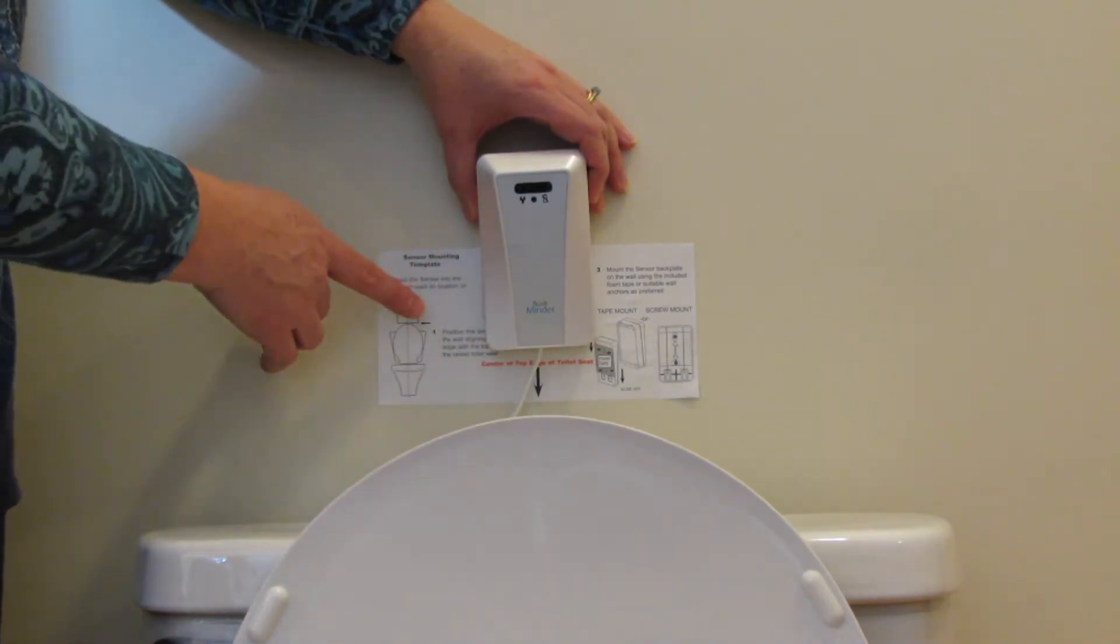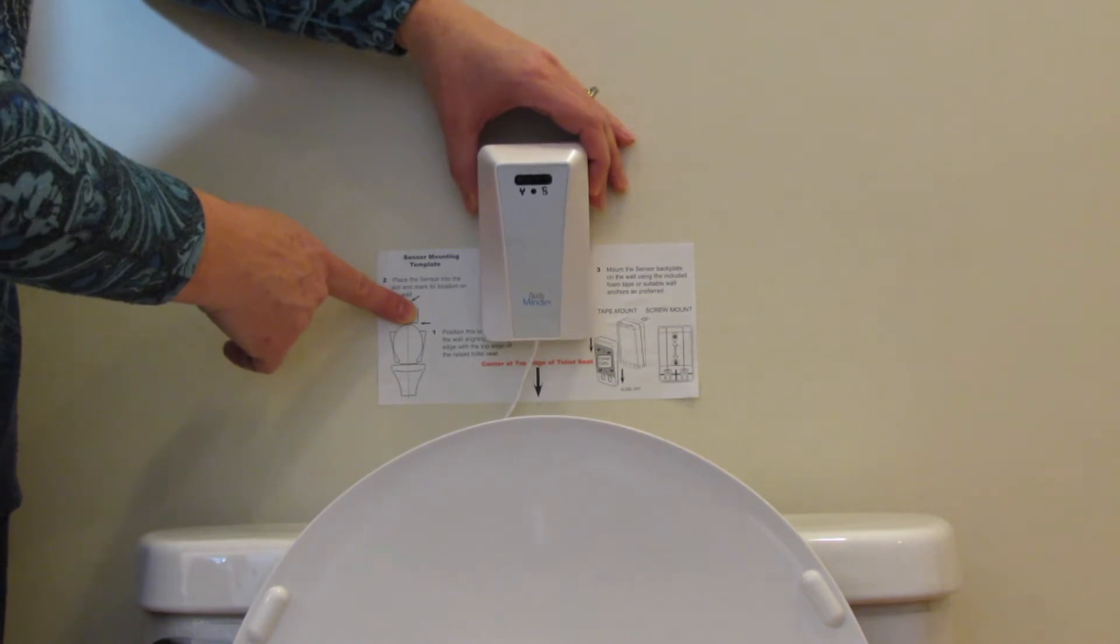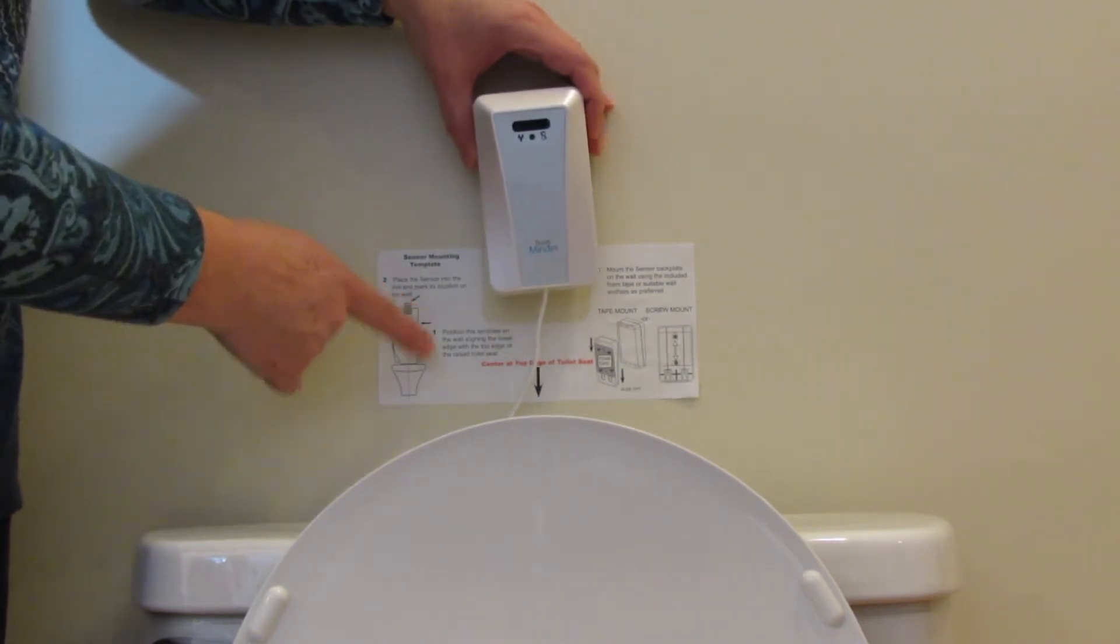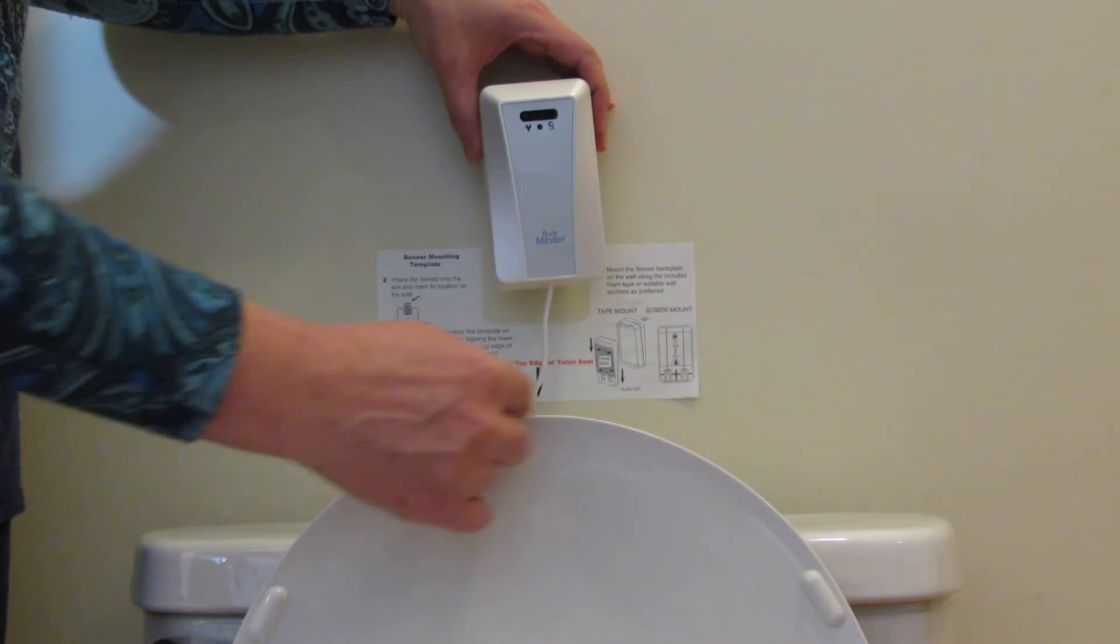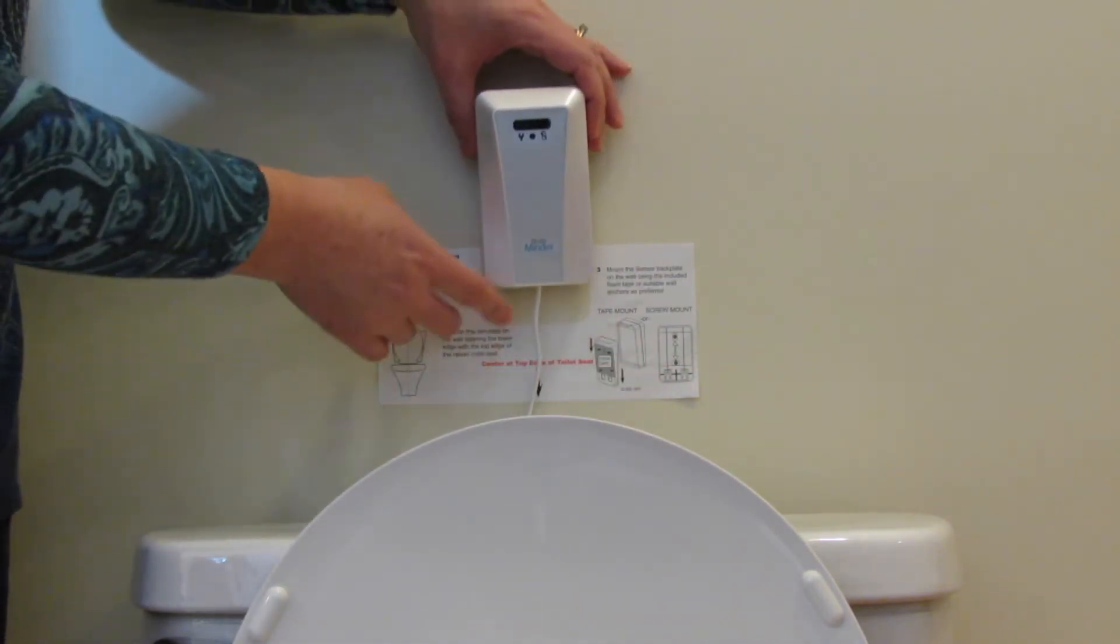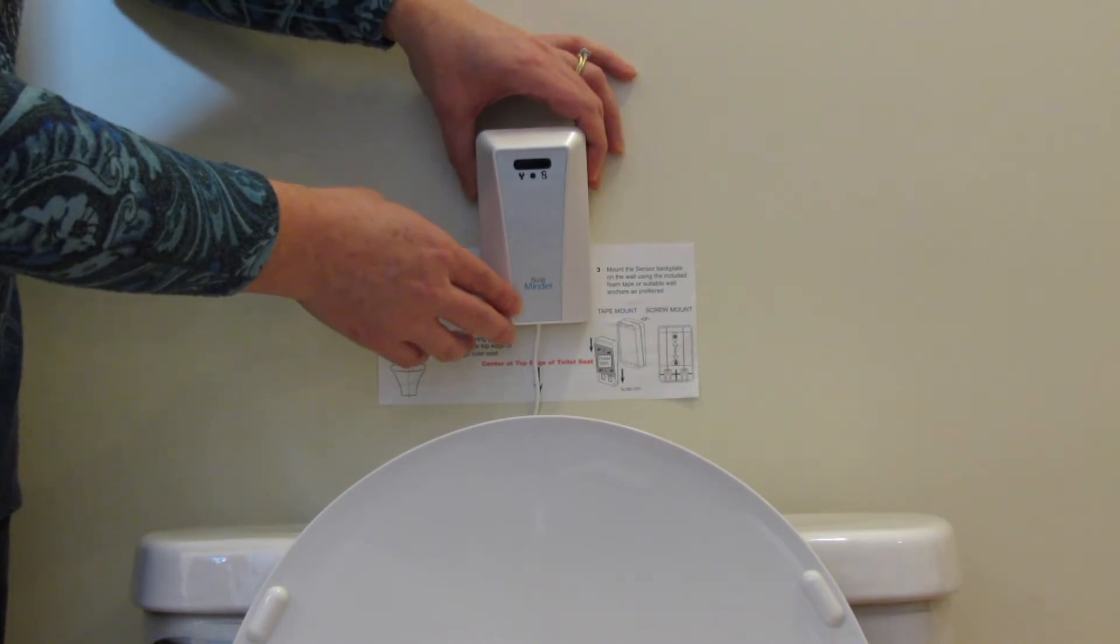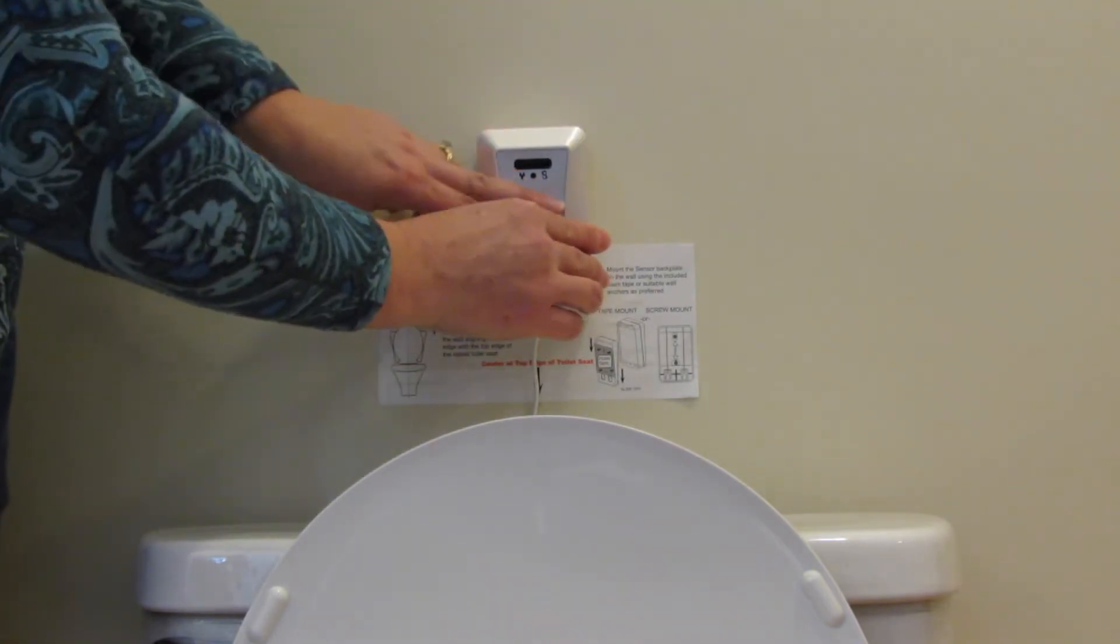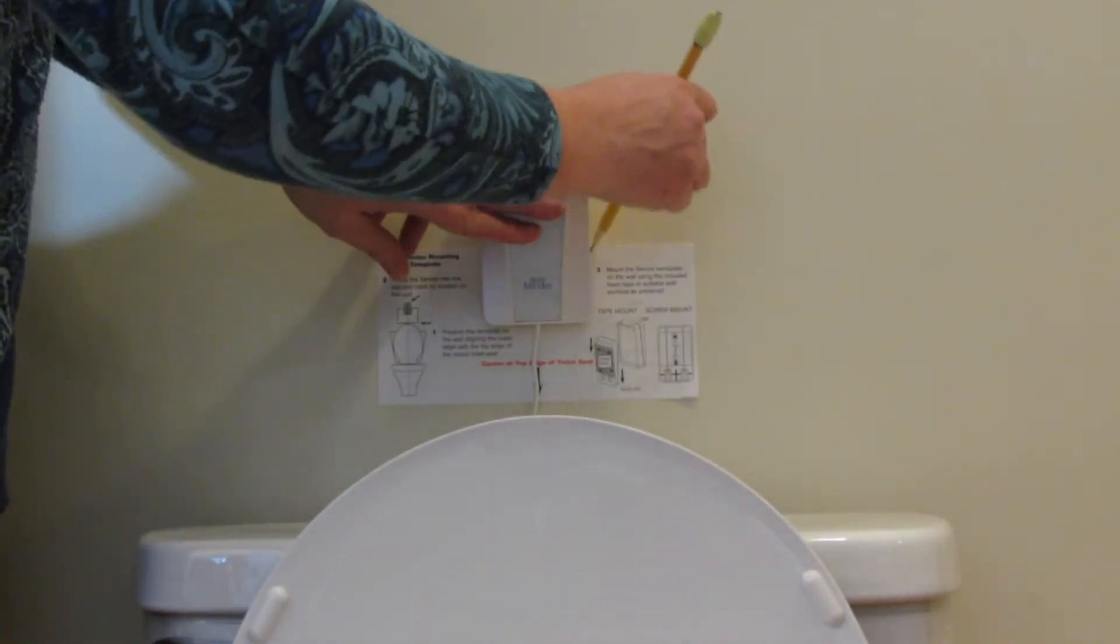Use the provided mounting template sticker. Position the template on the wall so that the lower edge of the template is even with the upper edge of the seat. Next place the sensor into the slot and mark the position of the sensor on the wall.